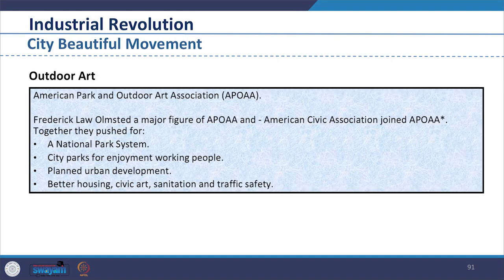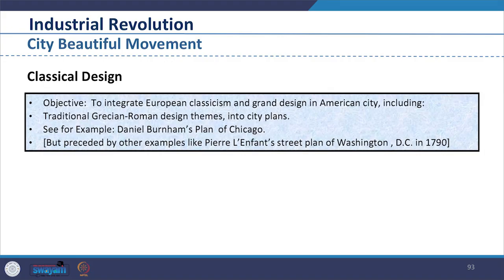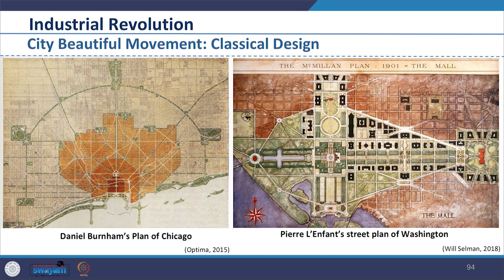The Outdoor Art component was led by the American Park and Outdoor Art Association and the National Park System — parks made in the city for the enjoyment of working people. It was planned urban development for better housing, civic art, sanitation, traffic and safety. Classical Design was led by architects of the time, integrating European classicism and grand design into American cities — including traditional Greco-Roman design themes in city plans, for example Daniel Burnham's Plan of Chicago — showing how people started looking at cities and incorporating elements of history in their built environment.